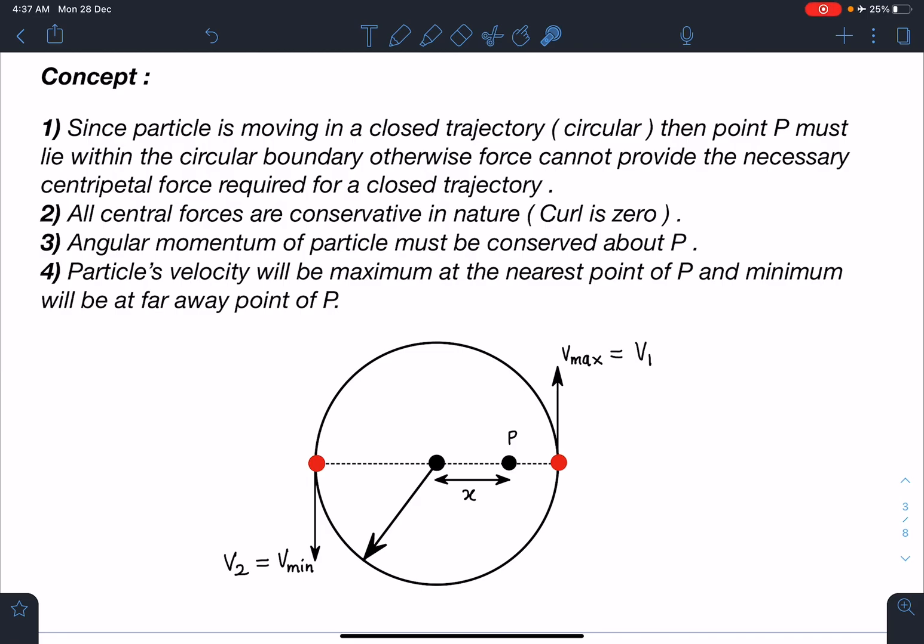Number four: The particle's velocity will be maximum at the nearest point of P and minimum will be at the far away point of P. We can comment on this simply by using conservation of energy, because the central force must be attractive in nature so potential energy term will be negative. This is the situation here. I'm assuming this point P is at a distance of x from the center of the circle. The radius is r, so the far away point is going to be r plus x and the nearest point is going to be r minus x.